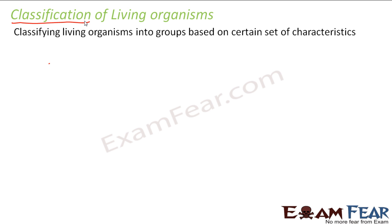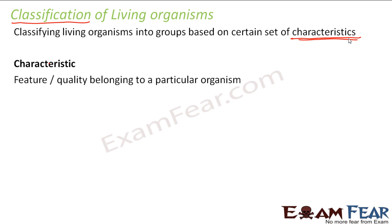So classification means we put some organisms in one class, some other organisms in a separate class, and then study about the characteristics of each of those classes. Characteristics play a very important role in how we classify organisms into different groups. We need to understand the meaning of the word 'characteristic': it is a feature or quality belonging to a particular organism.